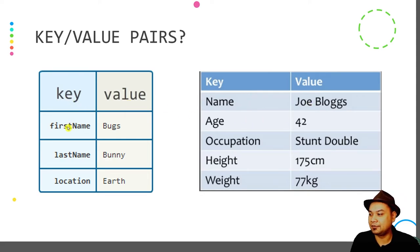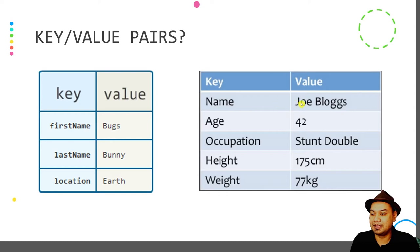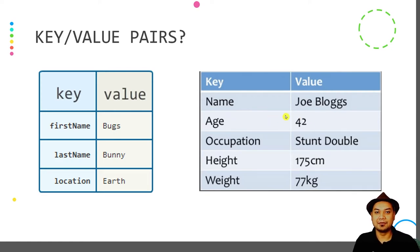For example, you might have a key of 'first name' with value 'Box', 'last name' with value 'Bunny', and 'location' with value 'US'. Or you can arrange key-value pairs like this: name is John Blocks, age is 42, occupation is stunt double, height is 175, and weight is 77. This is what we call key-value pairs.